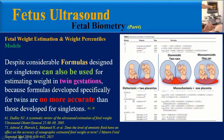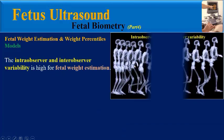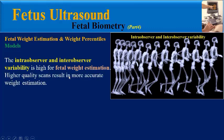Formulas designed for singletons can also be used for estimating weight in twin gestations, because formulas developed specifically for twins are no more accurate than those developed for singletons. The intra-observer and inter-observer variability is high for fetal weight estimation.